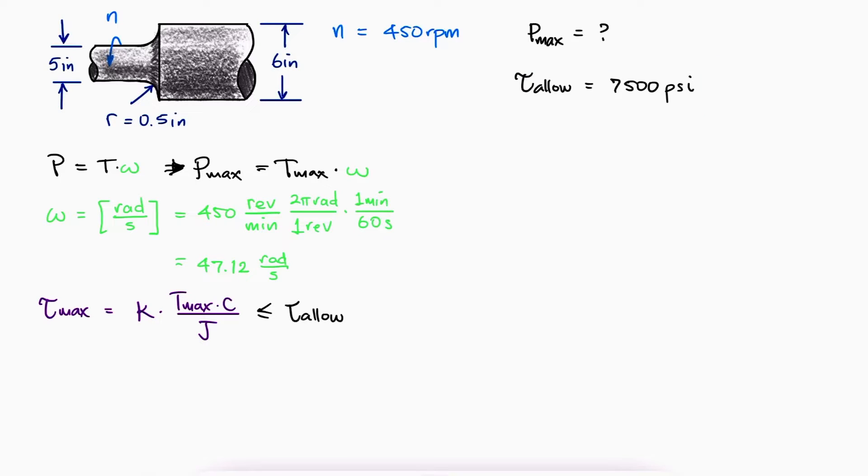This means that the maximum torque depends on the radius of the smaller section c, the polar second moment of area for that smaller section, and the stress concentration factor k.